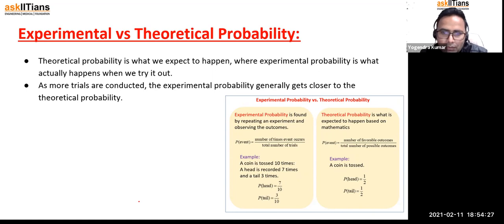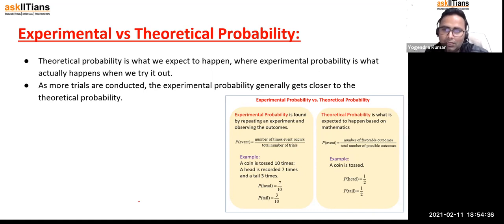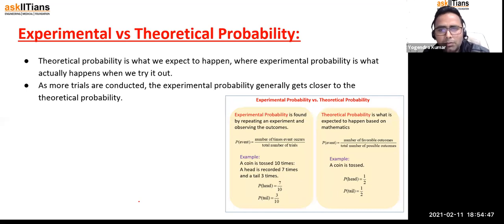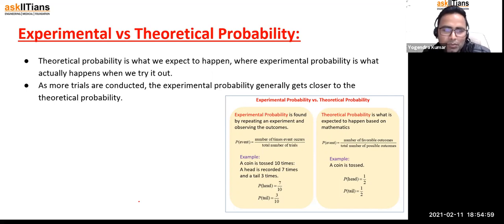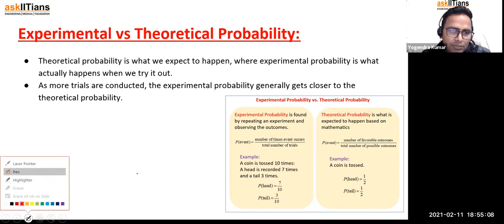Theoretical probability is according to mathematics — what is going to happen right now. If I toss a fair coin, either I'm going to get head or tail, so there are 50% chances. The definition of probability is: number of favorable outcomes divided by total number of possible outcomes. For a coin, head is one favorable outcome divided by two total outcomes.